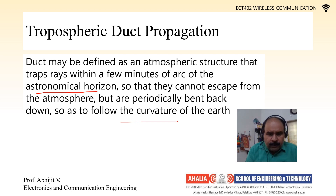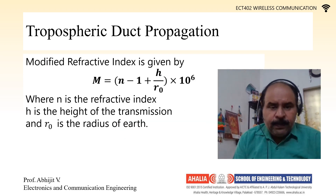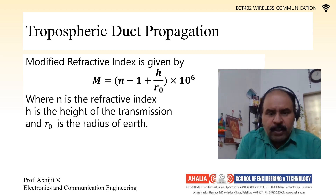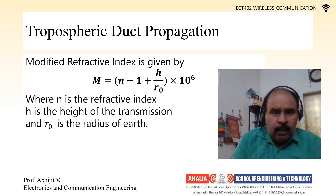Waves cannot escape the atmosphere but are periodically bent back down to follow the curvature of the earth — this is a duct. You can draw this diagrammatic representation in exams when asked for tropospheric duct propagation with diagram. The modified refractive index is defined as M = (n − 1 + h/r₀) × 10⁶, where n is the refractive index, h is the height of transmission, and r₀ is the radius of the earth.